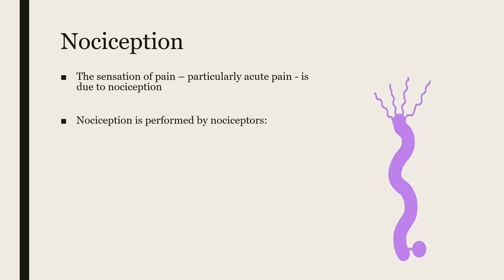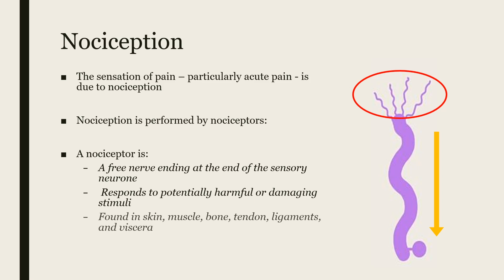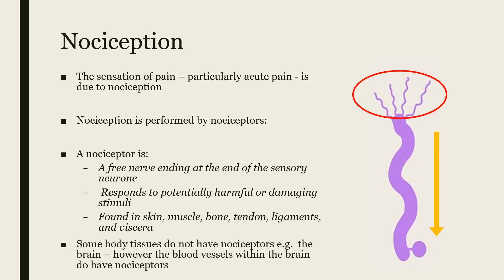Nociception is performed by nociceptors. A nociceptor is a free nerve ending at the end of a sensory neuron. They respond to potentially harmful or damaging stimuli — noxious stimuli. They are found in the skin, muscle, bone, tendon, ligaments, and viscera of the body. However, some body tissues do not have nociceptors — for example, the brain. However, blood vessels within the brain do have nociceptors.